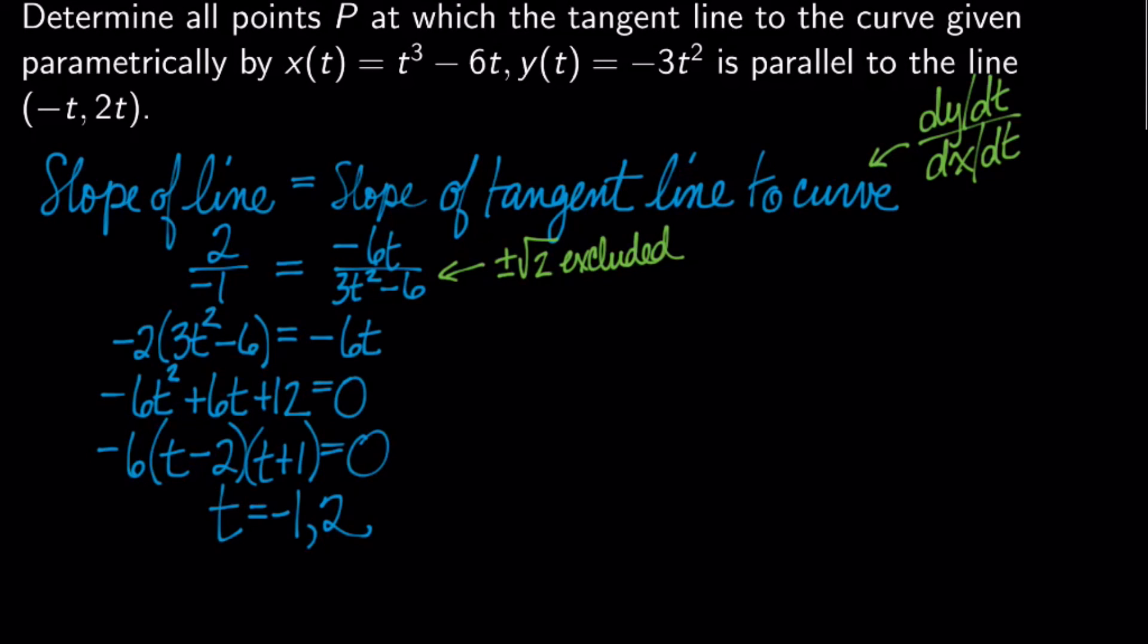I'm going to take those t's and I'm going to substitute them right here. Not here. I don't care about the line. I want the point on the curve. So, I'm going to substitute those and I get P equals 5. That's negative 1 substituted into here. Comma negative 3. Substitute that negative 1 into here. And also, negative 4 comma negative 12. That's the positive 2 substituted into these two curves.